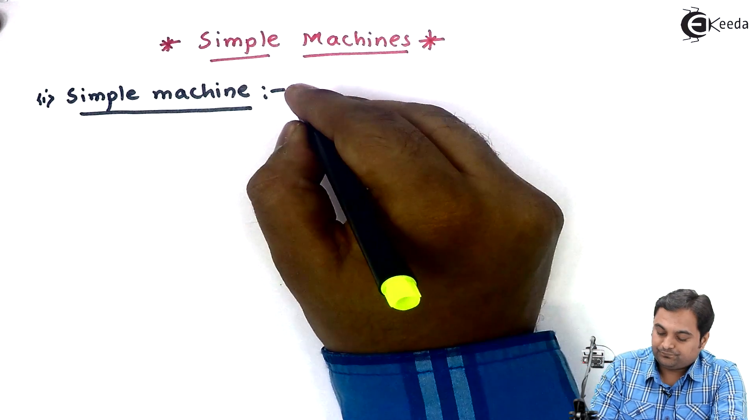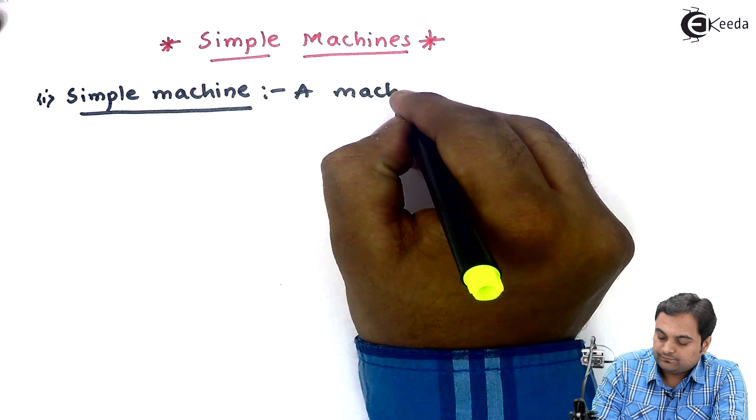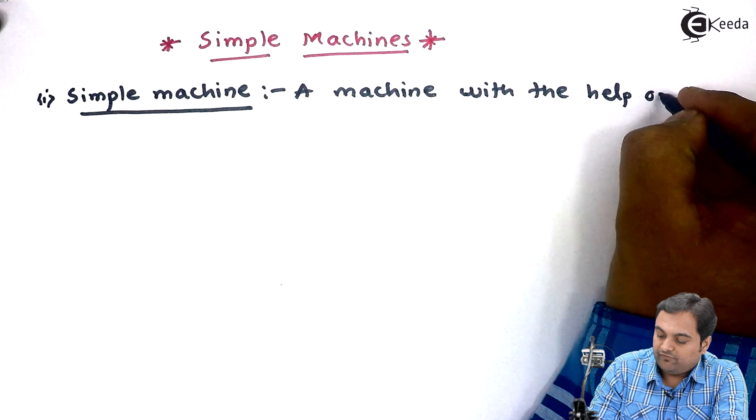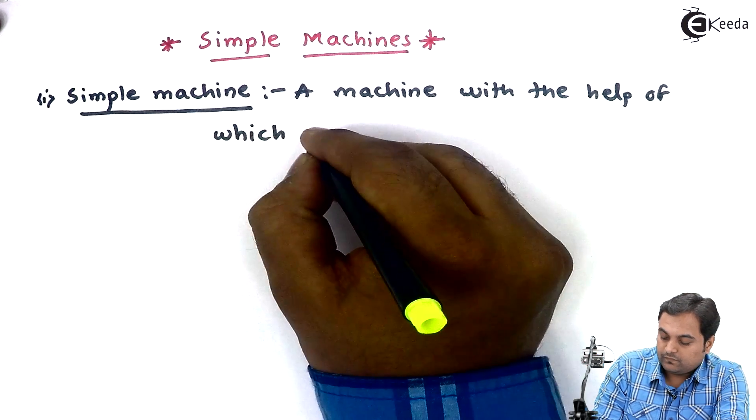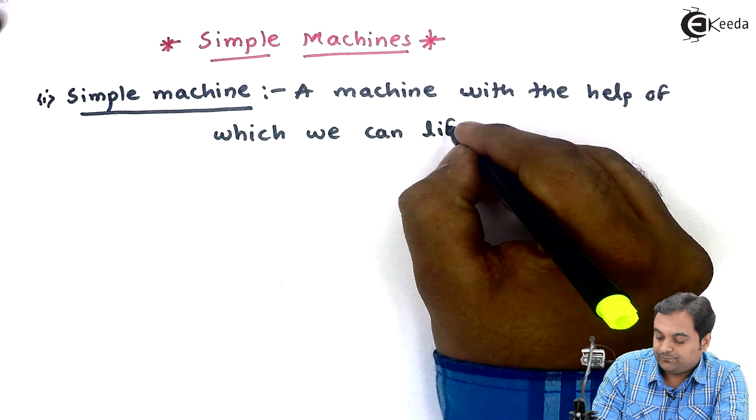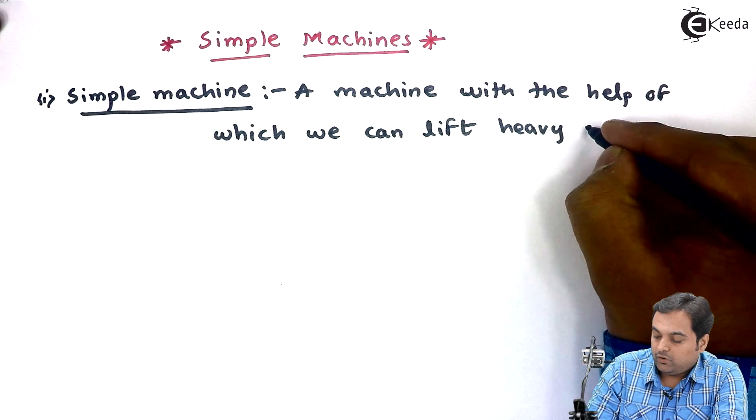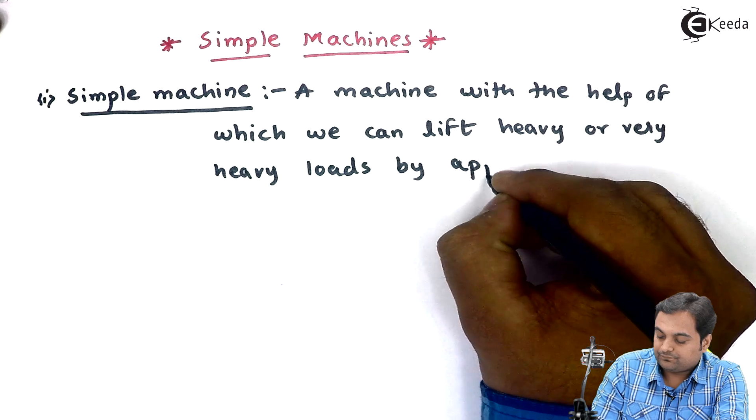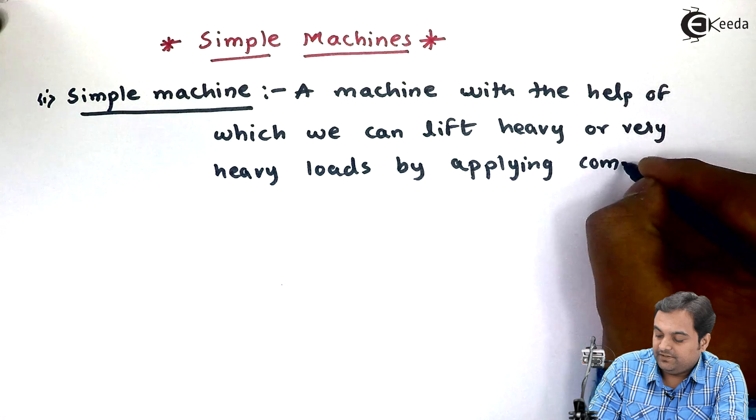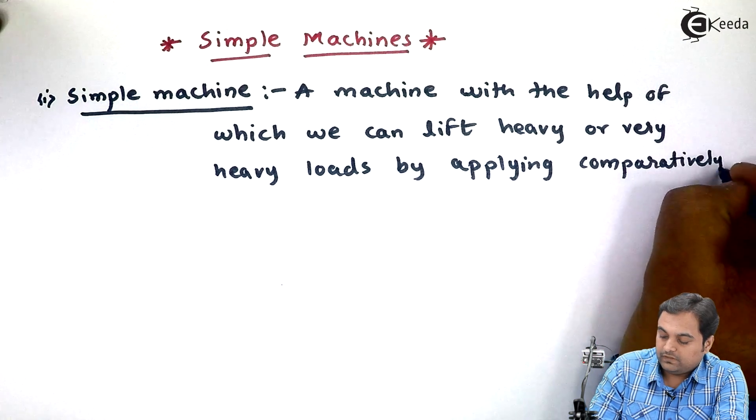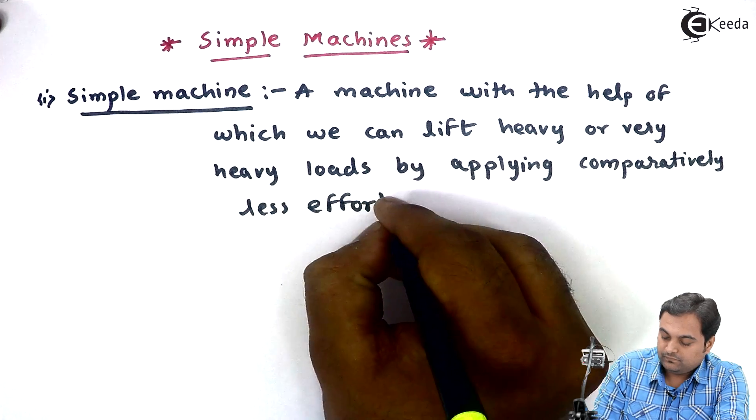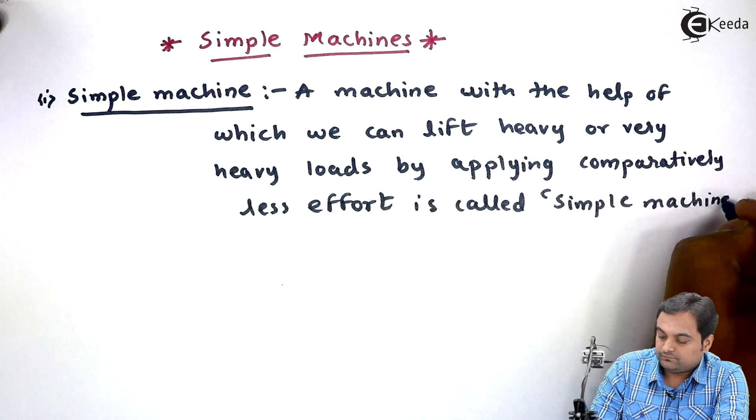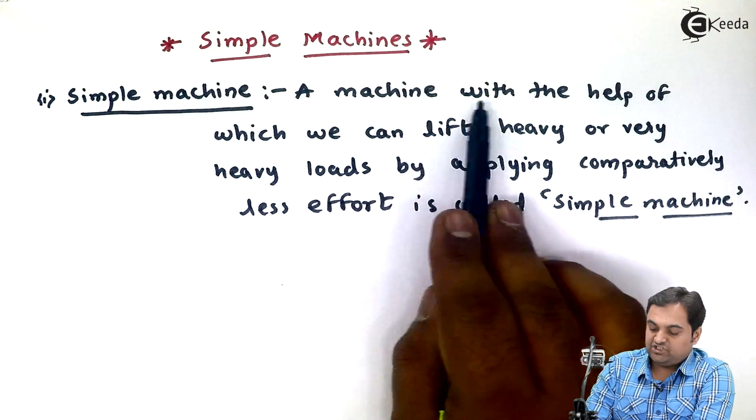Simple machine: a machine with the help of which we can lift heavy or very heavy loads by applying comparatively less effort is called simple machine.